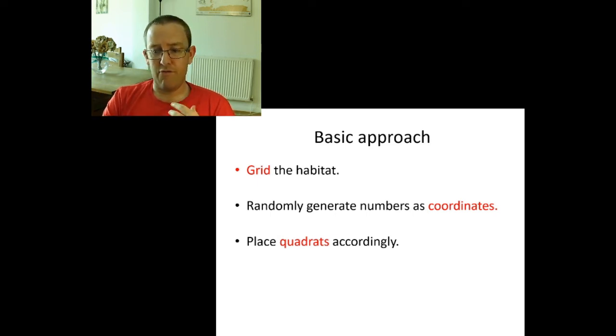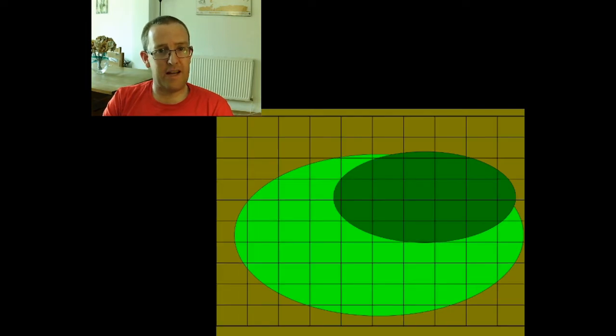So you grid the habitat, you randomly generate the numbers as coordinates and you place the quadrats accordingly. So to give you an idea of what that looks like, this might be a map of our habitat. If the habitat is too big to put tapes out on the ground, you put a grid over the map, you generate your random coordinates, x and y, and you place your quadrats here, here, here. Now we've been lucky there that those quadrats seem to, by eye, have given us a representative sample of the environment. That might not happen.